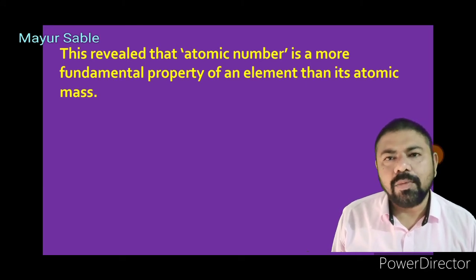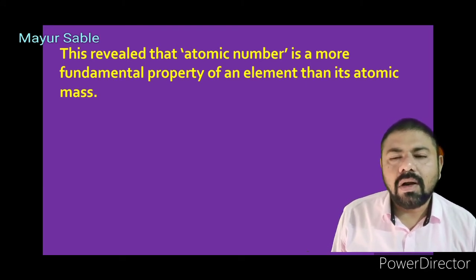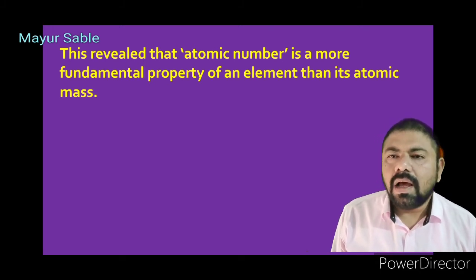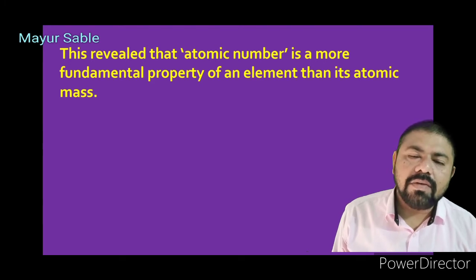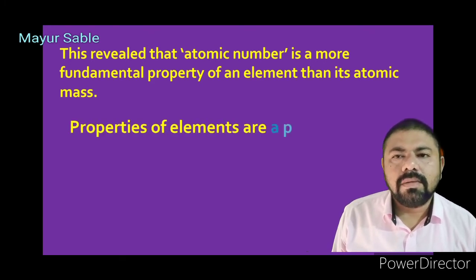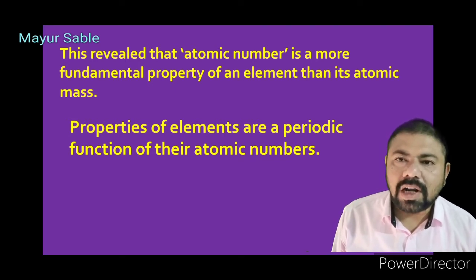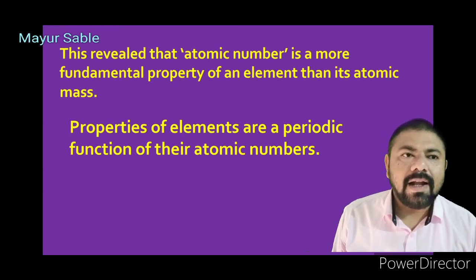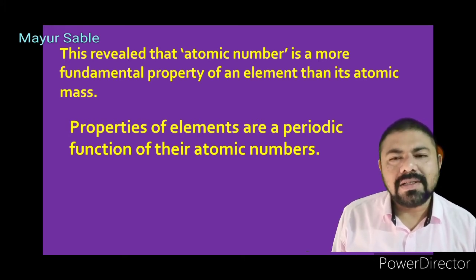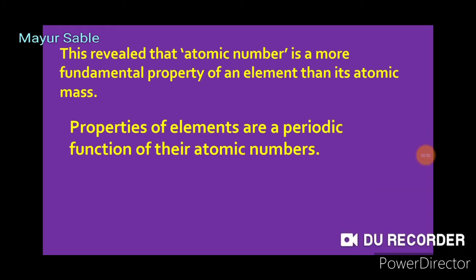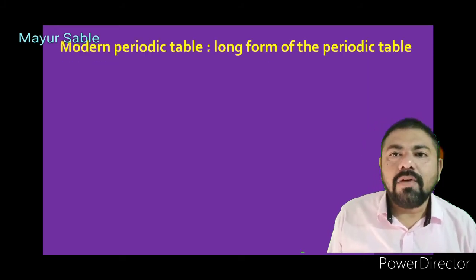Accordingly, the statement of the modern periodic law was revised. Mendeleev had stated that the properties of elements are a periodic function of their atomic masses. Sir Henry Moseley revised this and stated that the properties of elements are periodic functions of their atomic numbers. This became the modern periodic law.